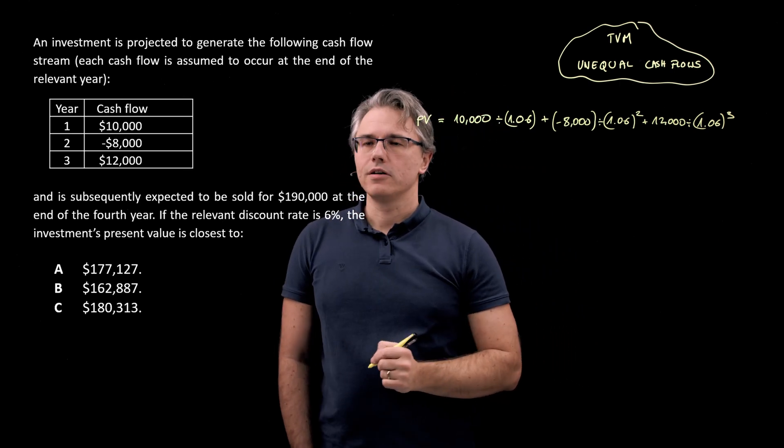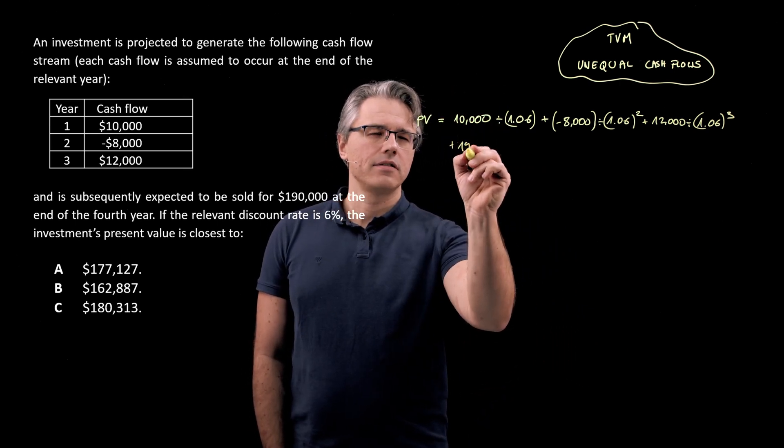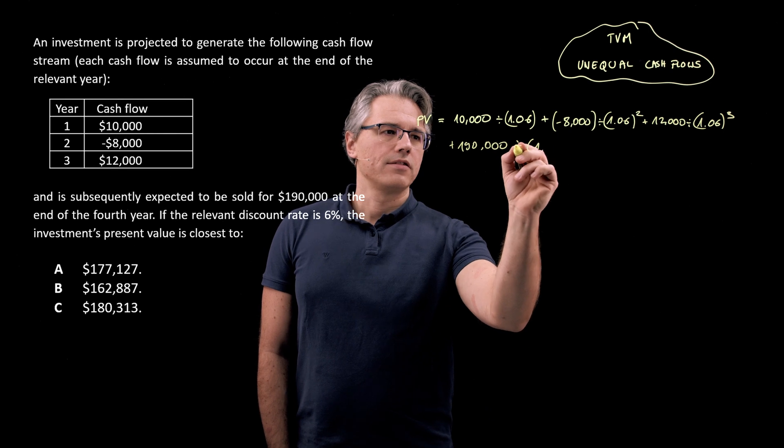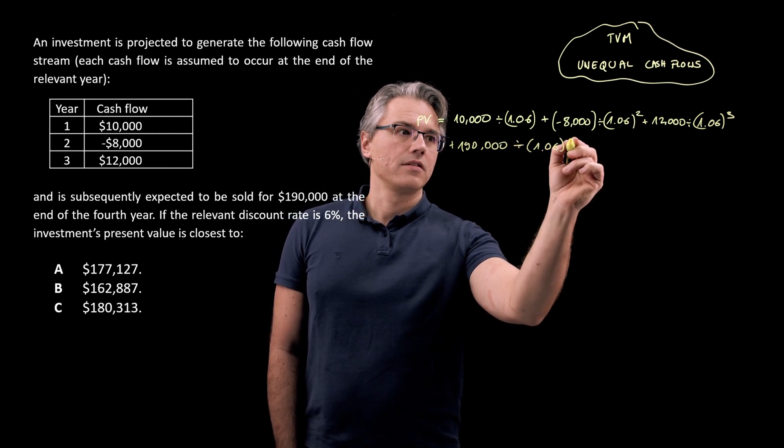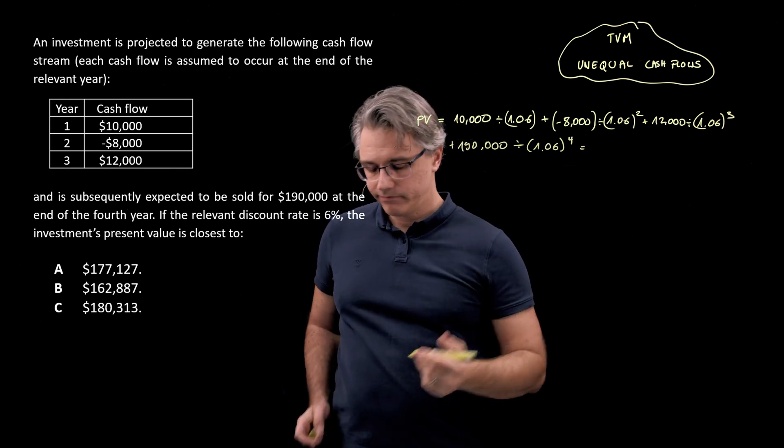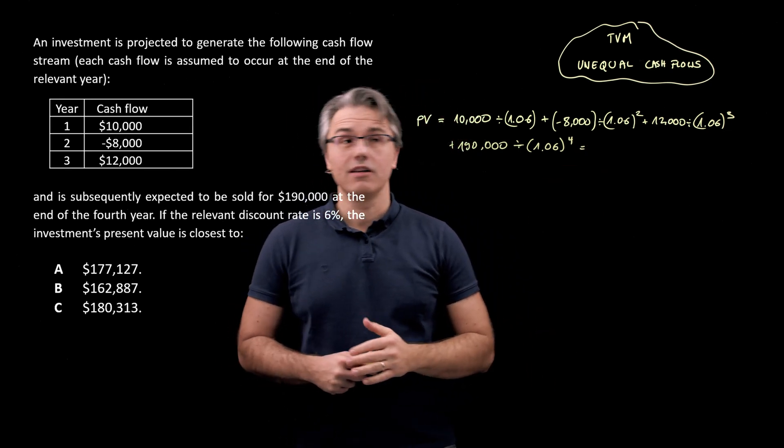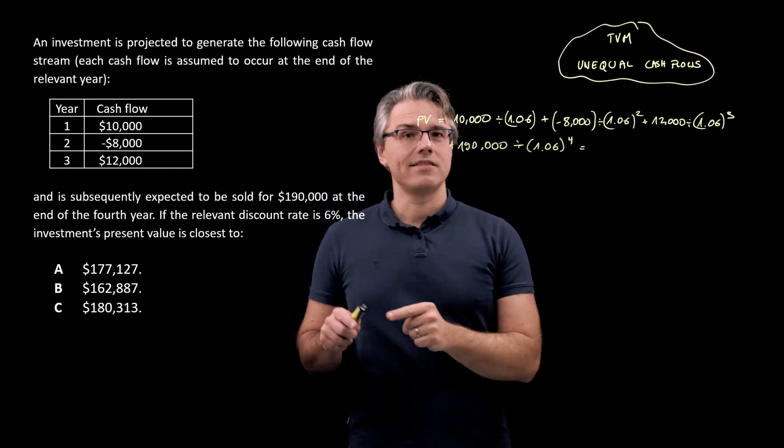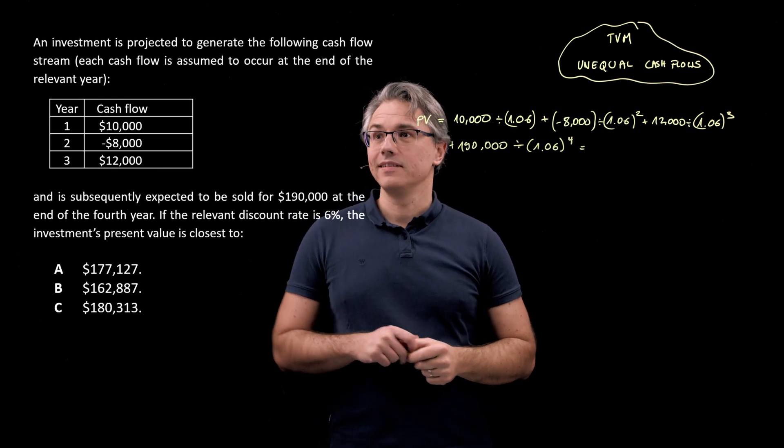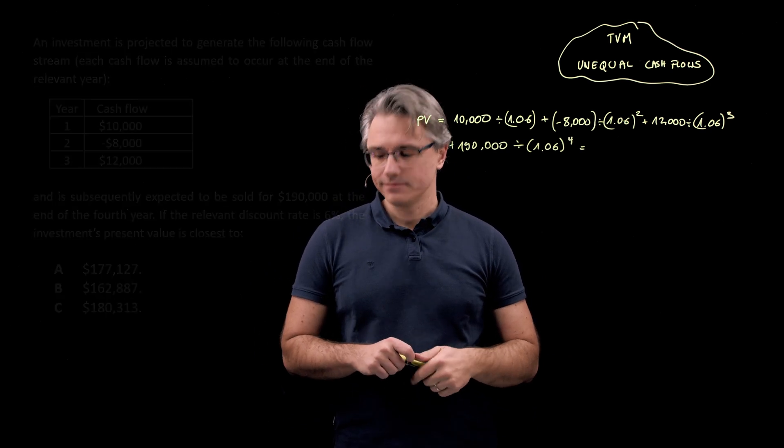And obviously, the fourth one would be 190,000, which I'm going to divide by a factor of 1.06 to the power of 4. And if I press equals, this should give me the right result. So let's see what this will yield on the calculator. Okay, let's do it.